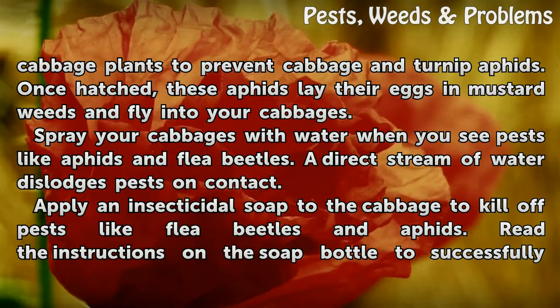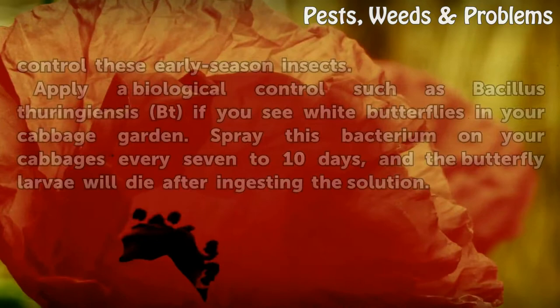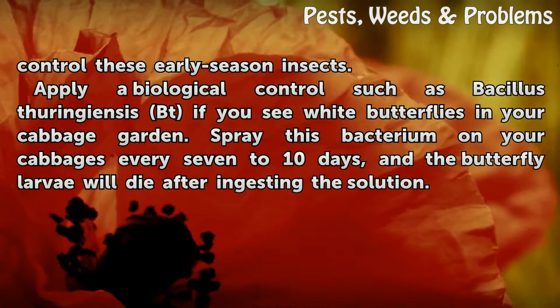Apply an insecticidal soap to the cabbage to kill off pests like flea beetles and aphids. Read the instructions on the soap bottle to successfully control these early season insects.